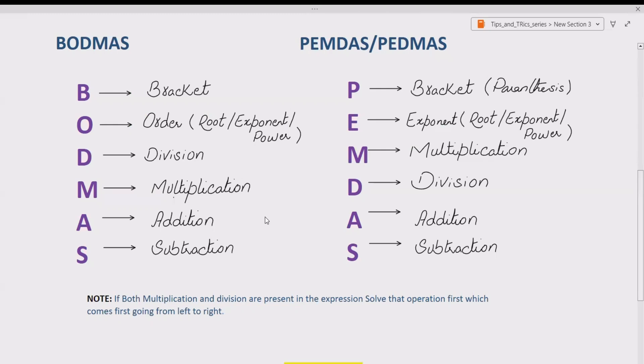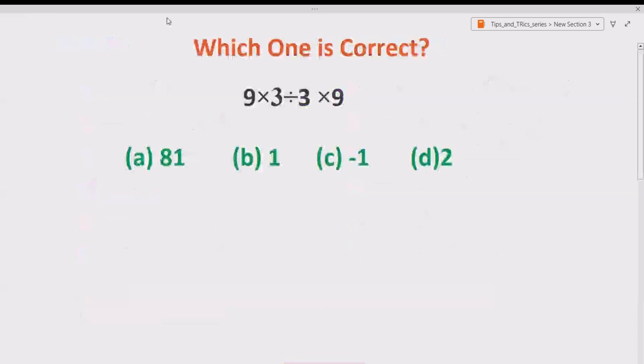So we are given 9 multiplied by 3, divided by 3, multiplied by 9. According to BODMAS or PEMDAS, we can do this thing because multiplication comes first.